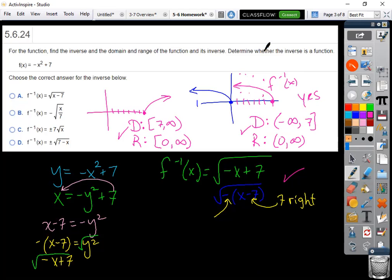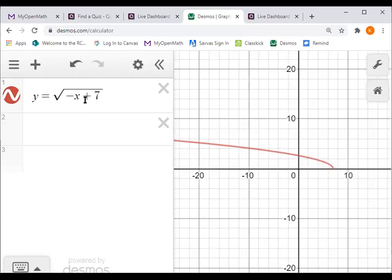In Desmos, wasn't it? Double check that, yeah, negative x plus 7, that was our graph and it looks just like that. All right.